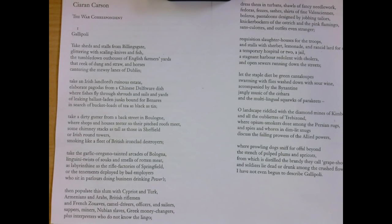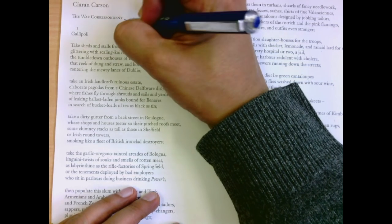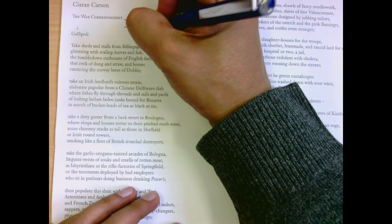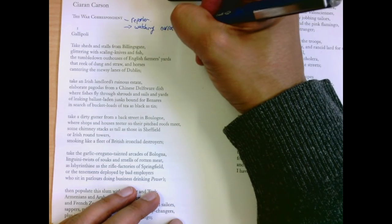Okay, we're going to look at the poem War Correspondent. We're going to look at two sections of it by Kieran Carson. First is called Gallipoli, and the war correspondent is a reporter who's watching and narrating, in a way, the war.